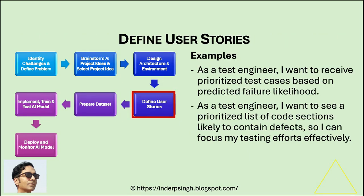Phase 4: Define user stories. Create user stories that outline the functionality of your AI testing project from an end-user perspective. User stories help focus your project on solving the identified challenge and delivering value. For example, as a test engineer, I want to receive prioritized test cases based on predicted failure likelihood. In the defect prediction project, a user story could be: as a test engineer, I want to see a prioritized list of code sections likely to contain defects, so I can focus my testing efforts effectively.